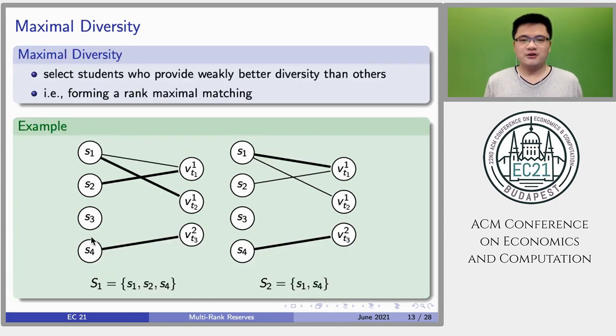We say a choice function satisfies maximal diversity if it always selects a set of students who provide weakly better diversity than other sets of students. In other words, it should select a set of students who can form a rank maximal matching. As shown in the figure, a choice function satisfying maximal diversity should select a set of students who are included in the only rank maximal matching.